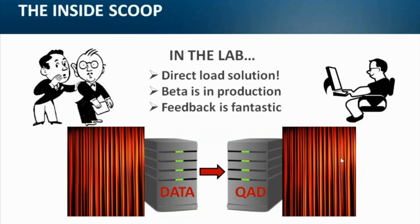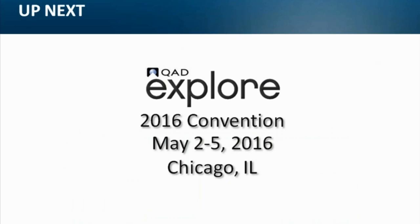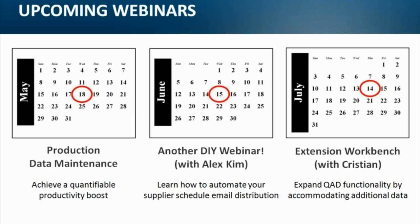We have QED Explore in just two weeks. We are a sponsor again this year and look forward to another great event. If anyone is attending the Explore Convention, please be sure to stop by and say hello. We also have upcoming webinars scheduled. In May, Olena returns for production data maintenance — she will show how easily you can achieve a quantifiable productivity boost. In June, you can learn from Alex, our fearless founder, how to automate your supplier schedule email distribution. And in July, Christian is going to demonstrate a clever way to augment QAD tables to accommodate supplemental data. Registration is open for all three of these webinars.